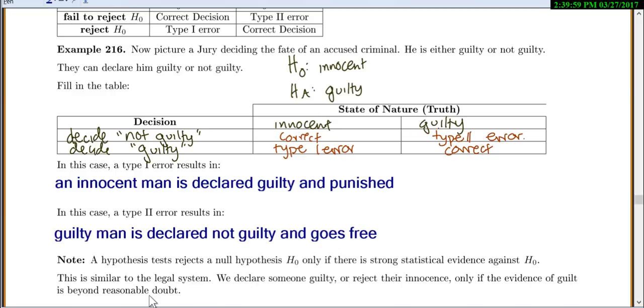Our hypothesis tests are just like that. We're going to reject a null hypothesis only if there's strong statistical evidence against it. It's kind of that beyond reasonable doubt.